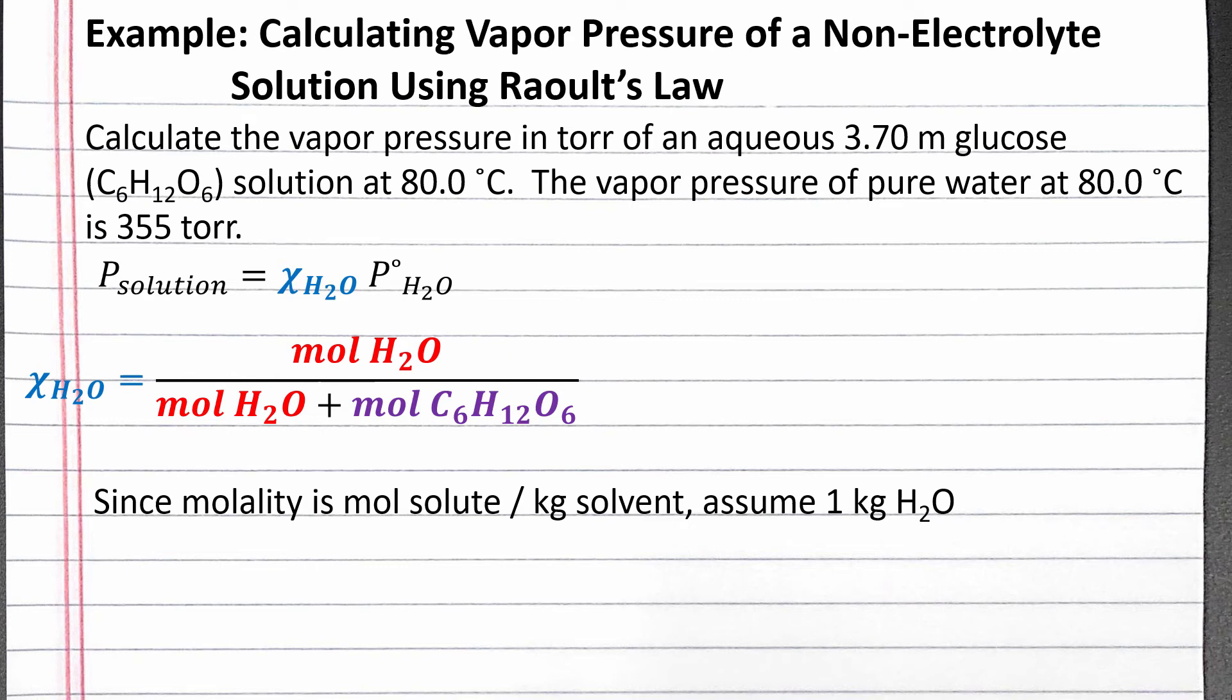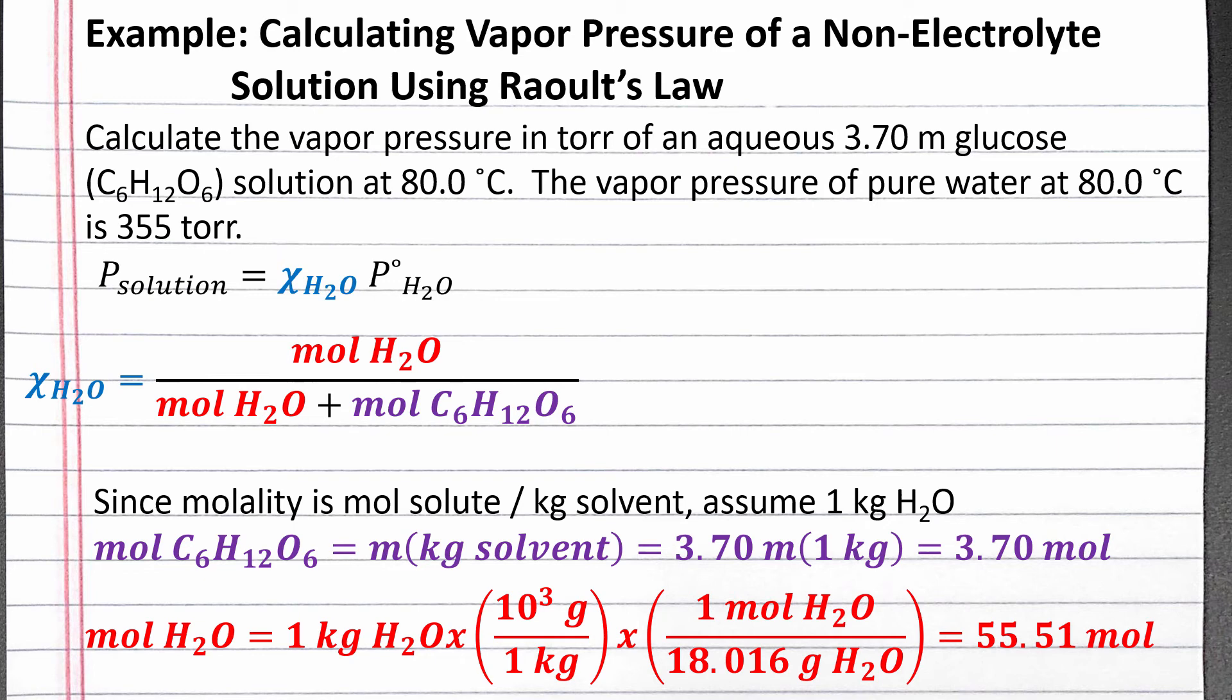Since molality is mole solute per kilogram solvent, if we have 1 kg water in our solution, we have 3.70 mol glucose. Next we can convert 1 kg water into moles water using dimensional analysis. 1 kg water is 55.51 moles water.